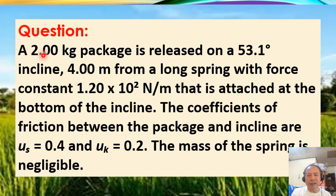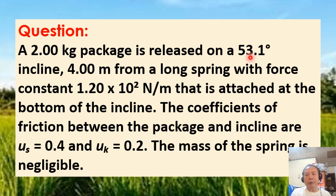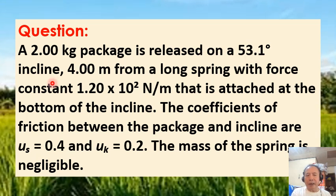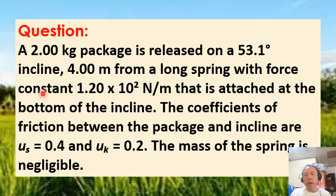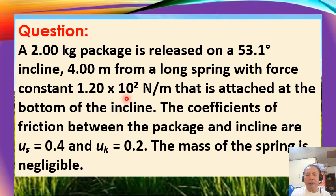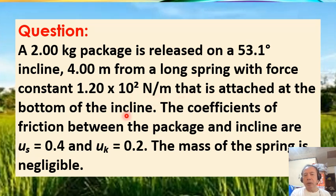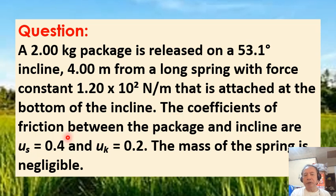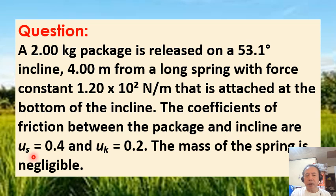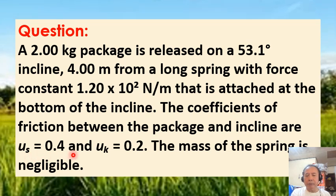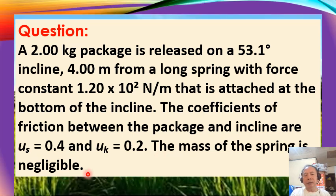The question is: a 2.00 kilogram package is released on a 53.1 degree incline, 4.00 meters from a long spring with force constant 1.20 times 10 to the second power newton per meter, that is attached to the bottom of the incline. The coefficients of friction between the package and the incline are mu_s equals 0.4 and mu_k equals 0.2. The mass of the spring is negligible.